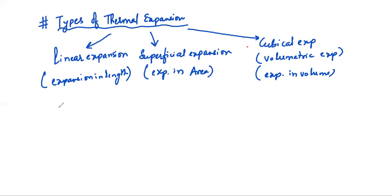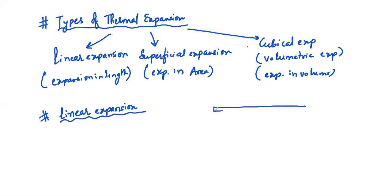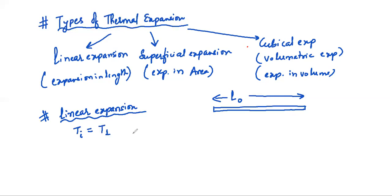We will start with linear expansion. Consider a rod or a wire with initial length L₀. We are changing its temperature from T1 to T2, so its initial temperature is T1 and its final temperature is T2. Its initial length is L₀, and its final length will be L₀ plus the change in length, delta L.